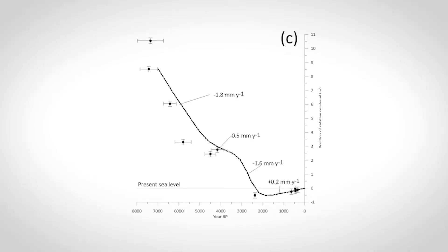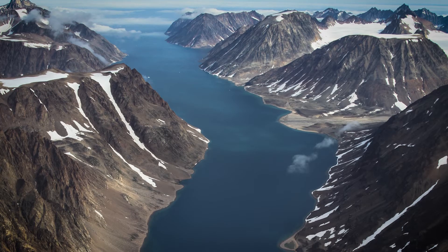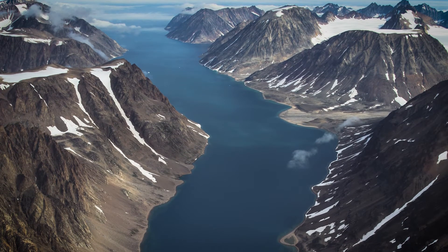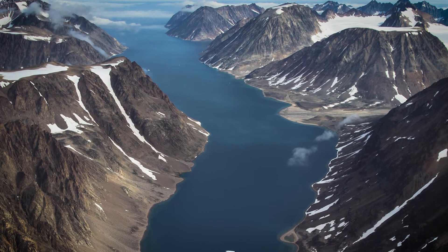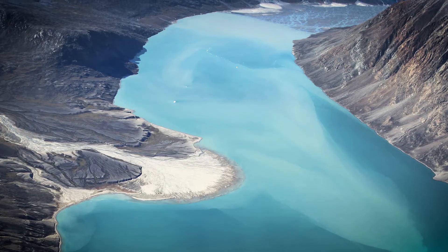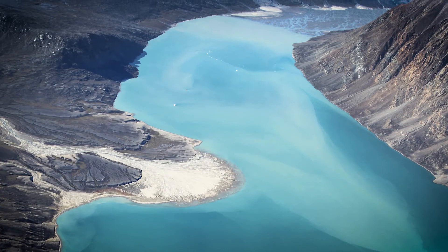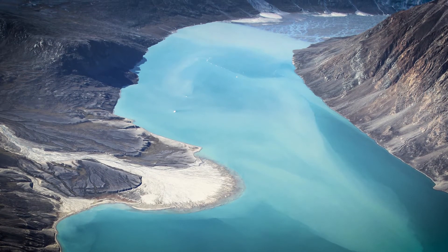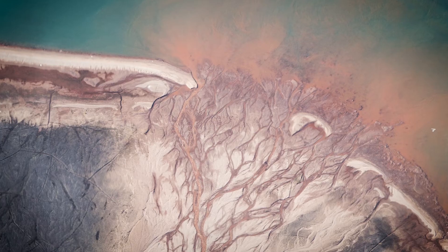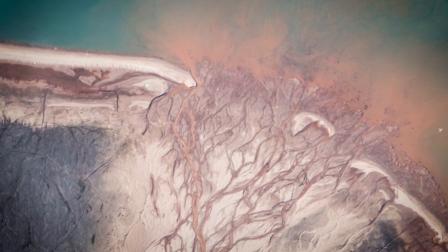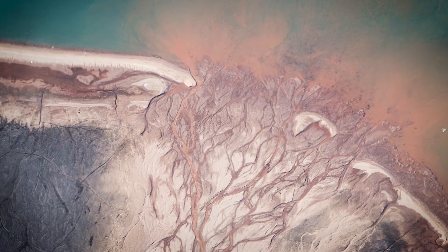We show that the coasts of Greenland respond to a warming climate the exact opposite way as the rest of the Arctic does. We show that the deltas of Greenland are growing, which is contrary to the general trend of an eroding Arctic.